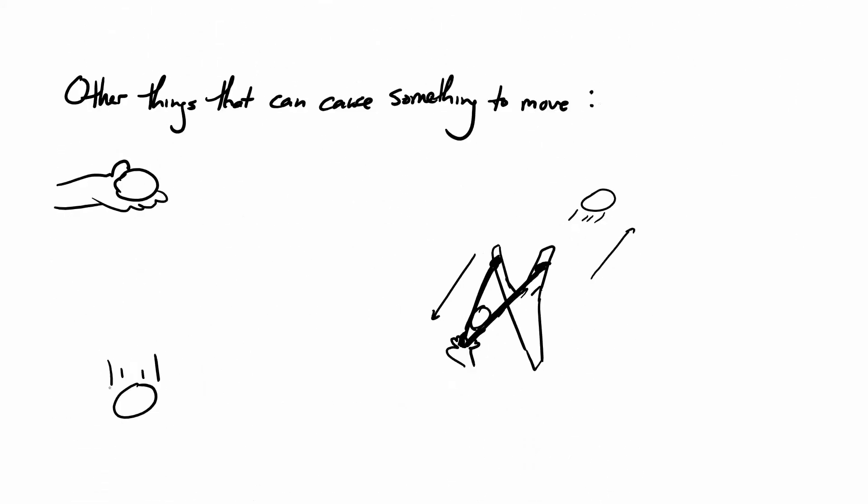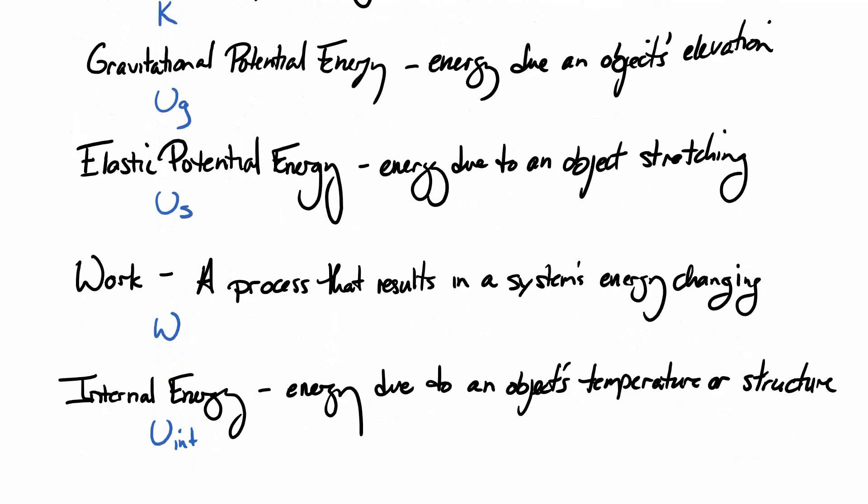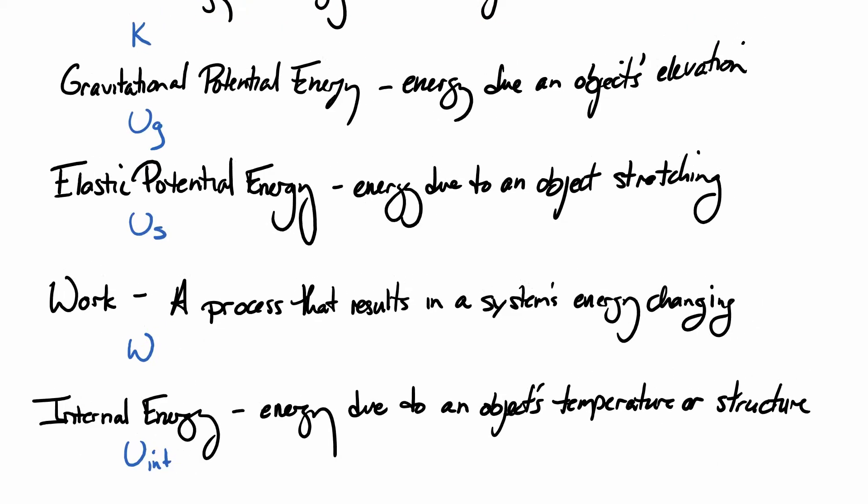If I lift a ball, I have increased the gravitational potential energy of the ball. I've done work on the ball. If I pull back the elastic, I have stretched the elastic. I've increased the elastic potential energy of the elastic and ball system. And then we also want to make some note, there can be energy that's due to an object's temperature or structure that we may not be capturing as readily here. And those are going to be internal energies. We're not going to get to the point where we have a good model for those in this class, but we do want to keep track of them.